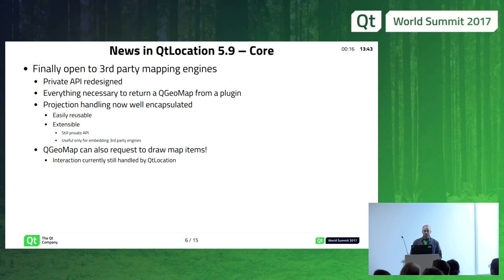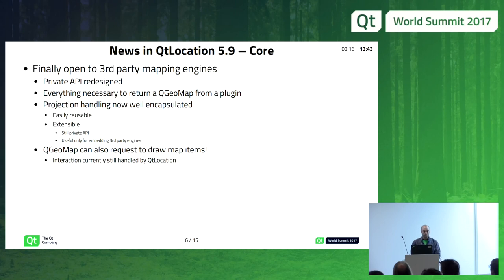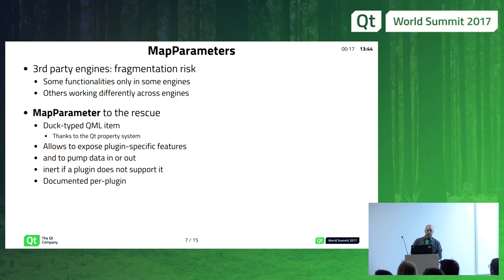With support for third-party engines, drawing map items on those engines could be challenging. So we allowed a plugin to declare which map items it can draw. If the Mapbox plugin can draw all geometric items, those items are passed to the plugin and the Qt render path is disabled. Interaction still happens in Qt because these items are QQuickItems and interaction is normally achieved using mouse areas.